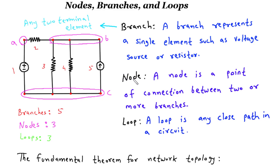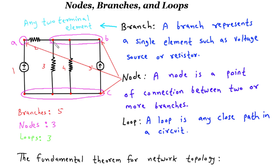Let's start with nodes. In an electrical circuit, a node is simply a point where two or more components or wires connect. It can be visualized as a junction or a connection point. Nodes are often represented by dot symbols in circuit diagrams, and they play a crucial role in determining how current flows through a circuit.